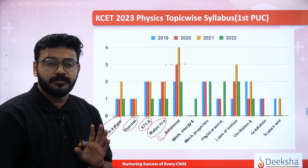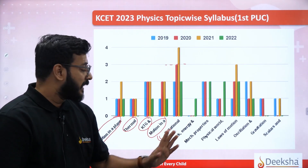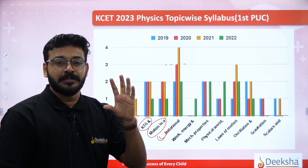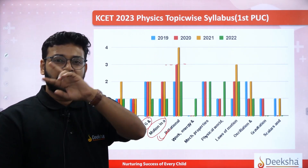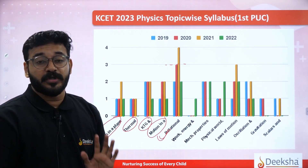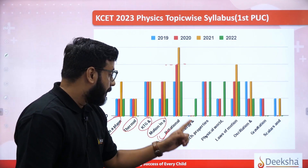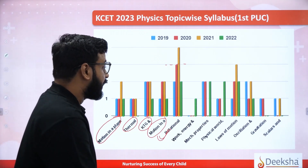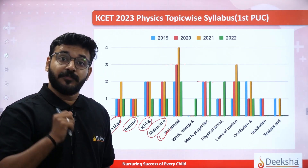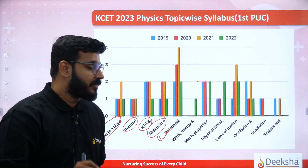Work energy is very important. In 2022 there was one question, but in the last three years there were no questions. Basically, work energy is related to dimensions. There is a chance that a purely work energy question appears. Mechanical properties are also very important — every year at least two questions come from mechanical properties of liquids and solids. Mechanical properties of fluids especially is very important.